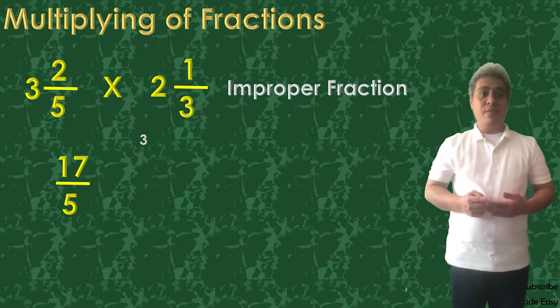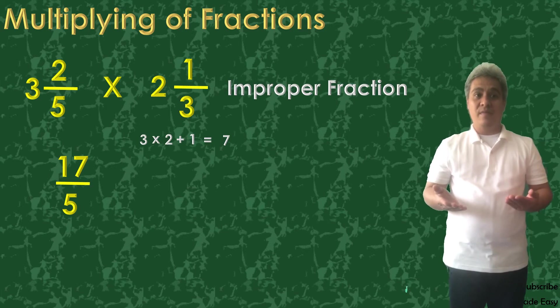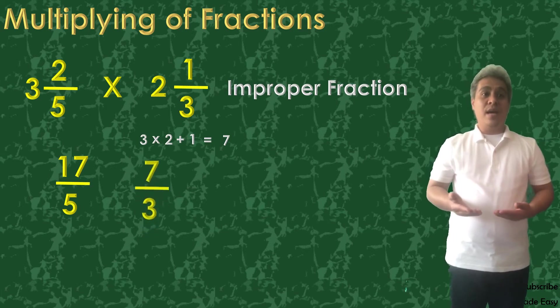We will do the same thing to the other fraction. 3 times 2 plus 1 equals 7. So it will become 7 over 3.